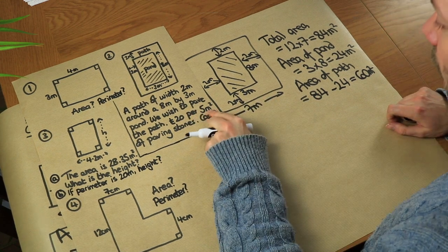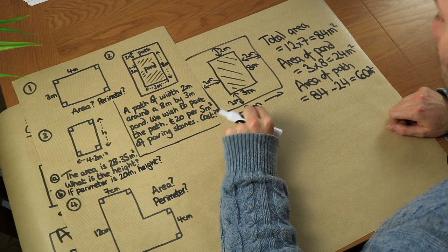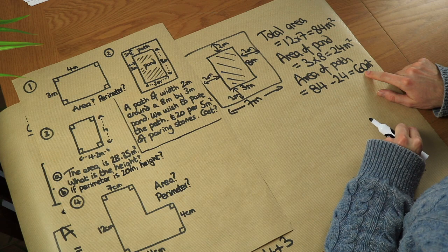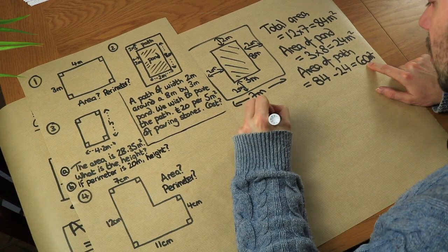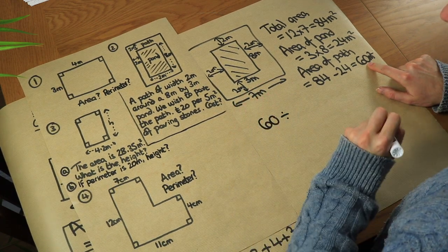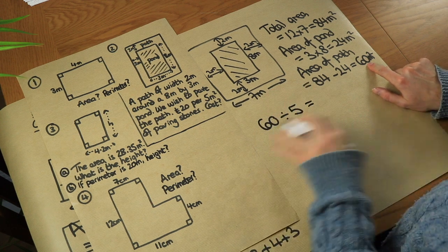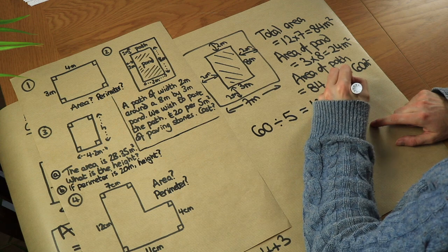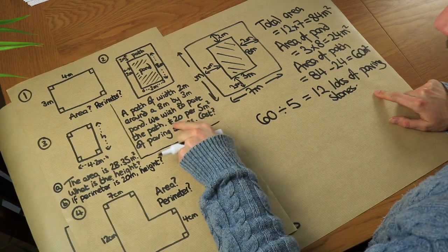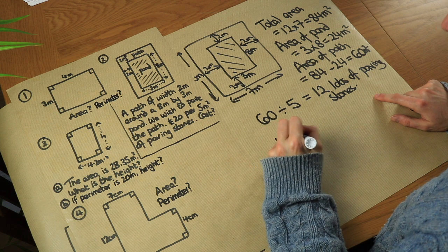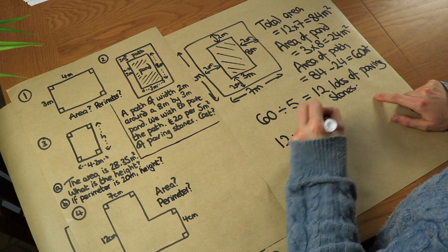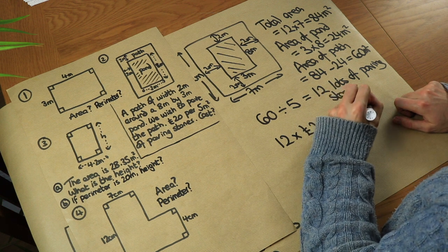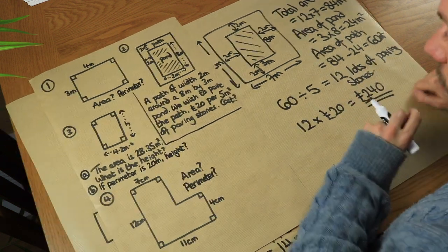The area of the path is the big rectangle minus the pond: 84 minus 24, which is 60 meters squared. It costs 20 pounds per five meters squared, so we need to find how many lots of five meters squared make up 60 meters squared — that's 60 divided by 5, which is 12 lots. Each lot costs 20 pounds, so 12 times 20 pounds is 240 pounds. That is the final answer.